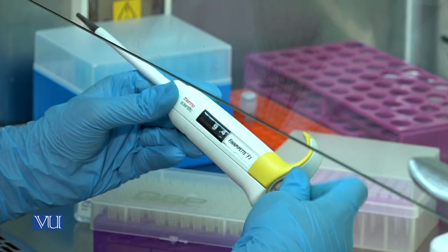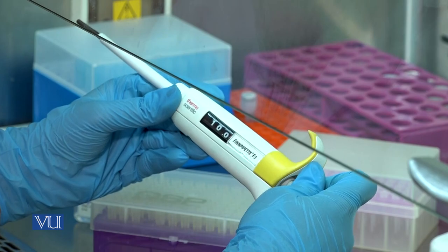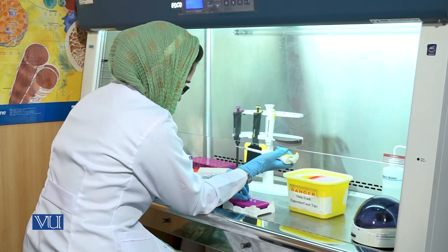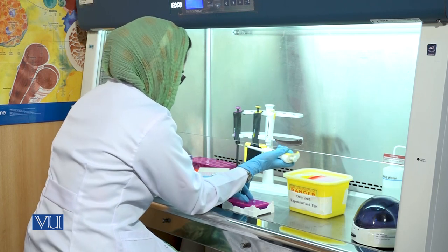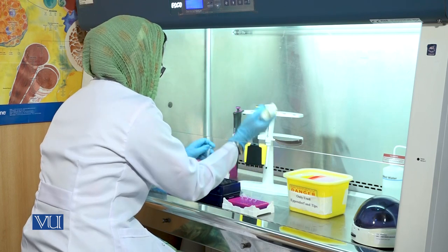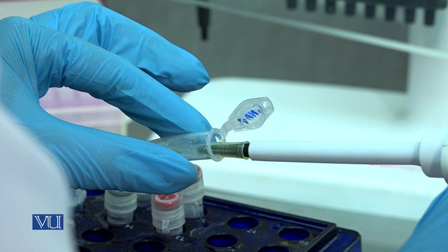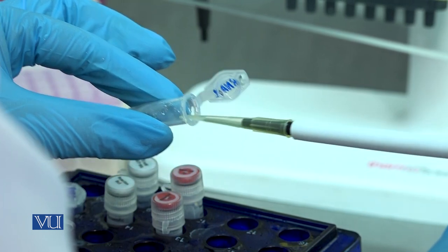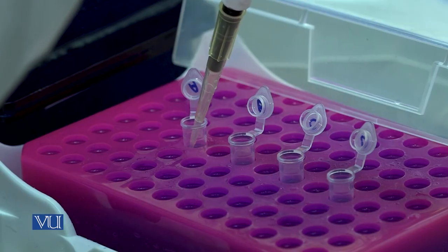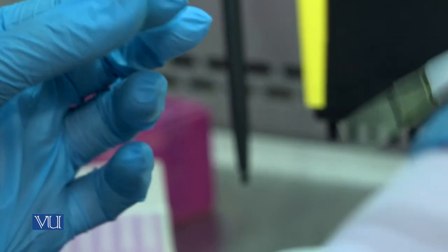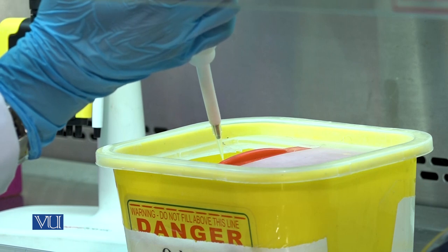Set the micropipette to 10 microliters. Now open the lids of the PCR tubes. Take 10 microliters of RNA sample and then transfer it into the PCR tubes. Discard the used tip into the waste box.